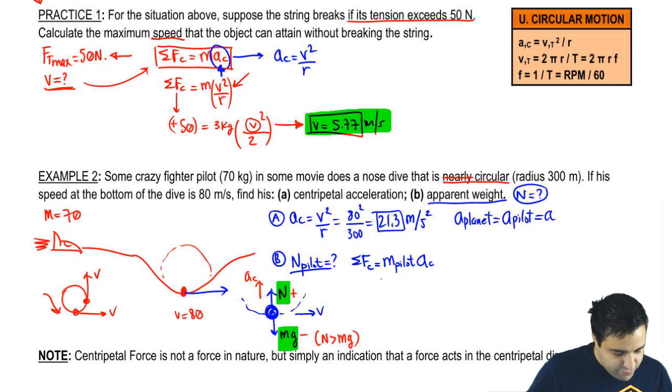But let's solve this. So I have normal positive plus mg negative, mass of pilot, which is 70. Let's just write ma here for now. So I can show you that normal, which is what I'm looking for, is just ma plus mg.